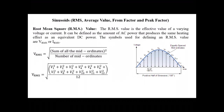The RMS value is the effective value of a varying voltage or current. It can be defined as the amount of AC power that produces the same heating effect as an equivalent DC power. The symbols used for defining an RMS value are Vrms or Irms.